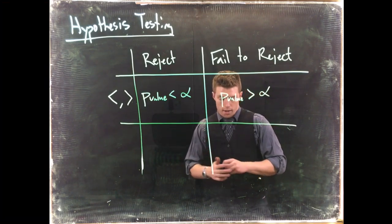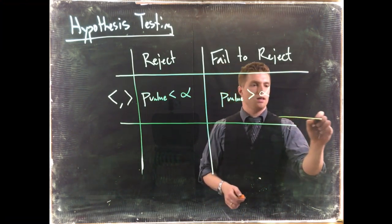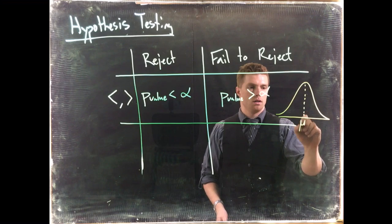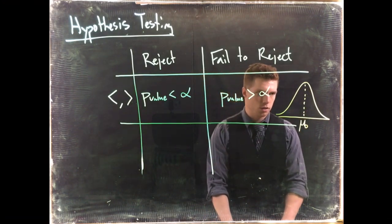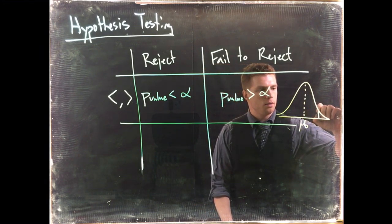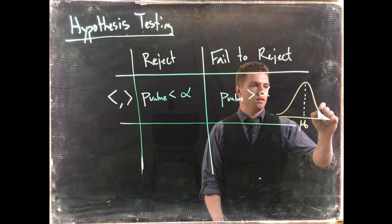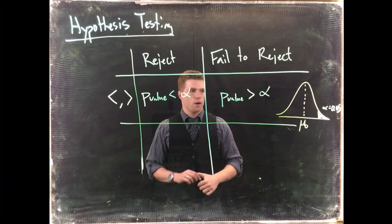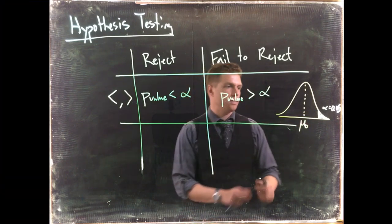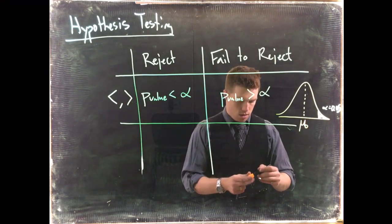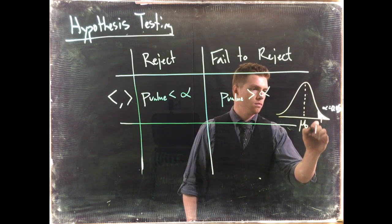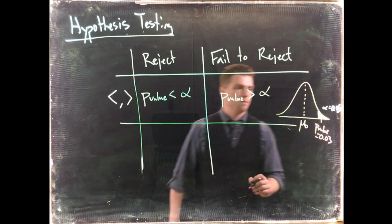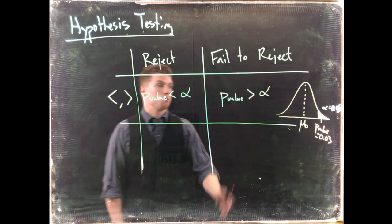Let me do a quick drawing. If we get a distribution, this is our hypothesized mean or it could be a hypothesized proportion. If this is our alpha, we say that alpha equals 0.05. If we're able to get to 0.05, and let's say our specific value that we get has a p-value that equals 0.03, well here we would reject the null hypothesis because our p-value is less than 0.05.